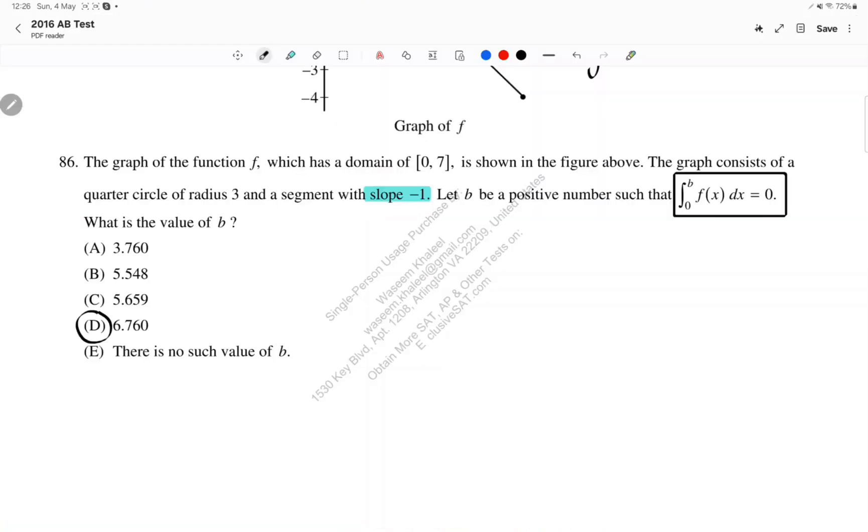So going back here, my answer is going to be choice D. Because right now, if I add the area of the quarter circle, which is positive, and the area of the shape, which I found to be negative, I will get a zero area.